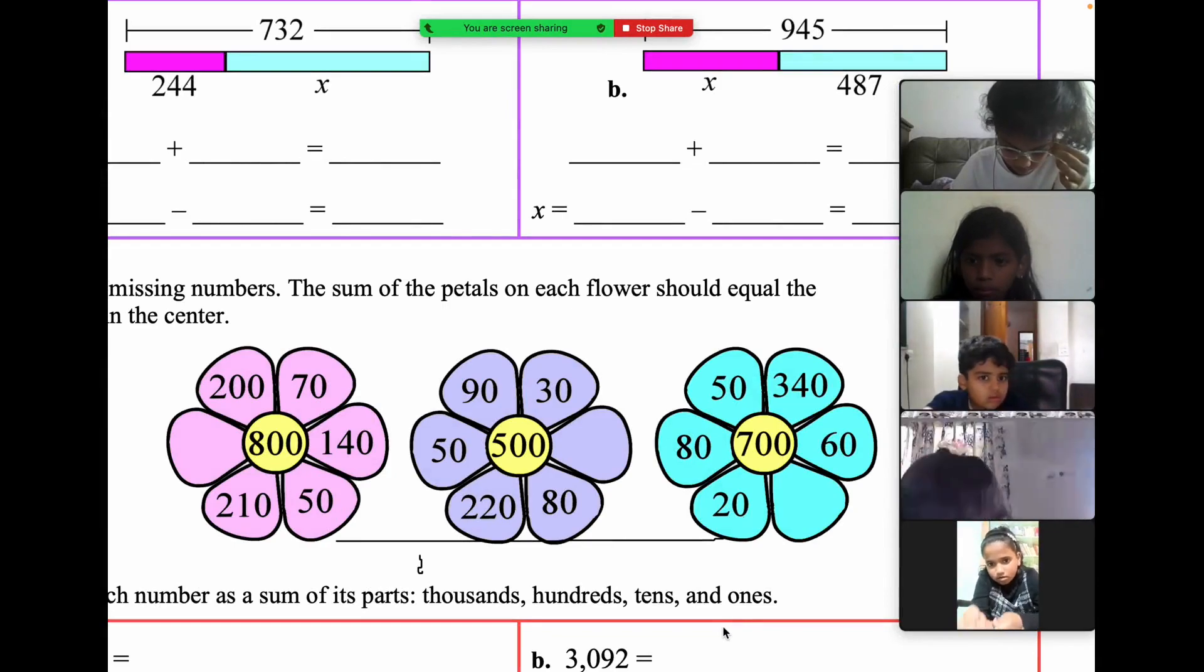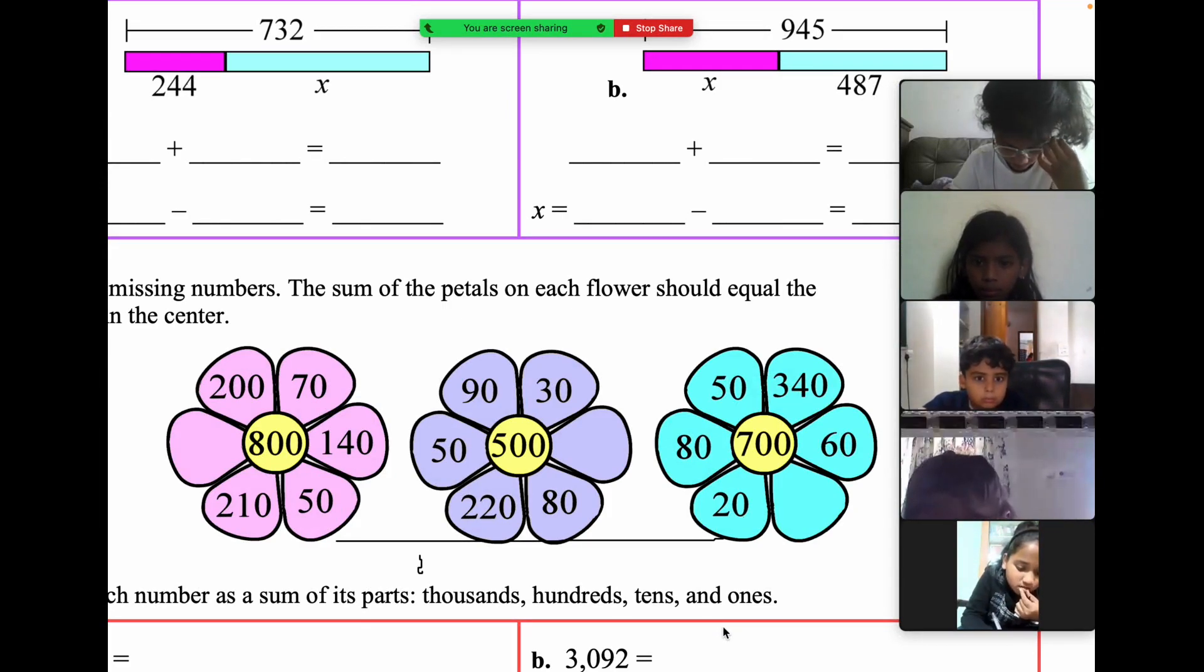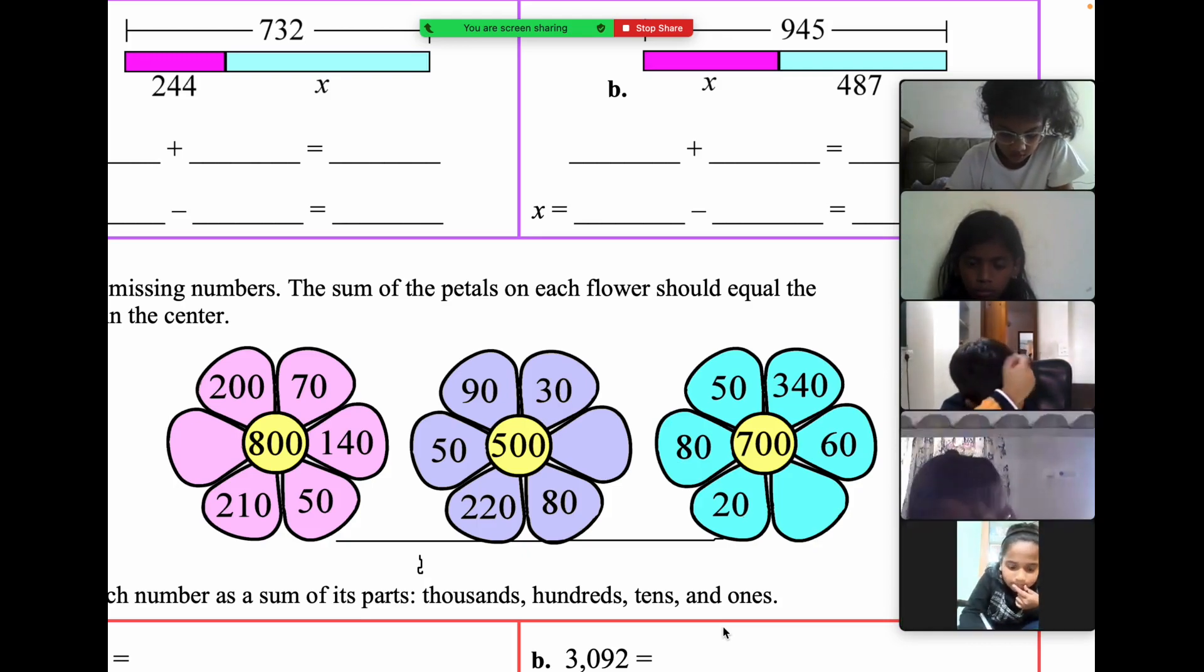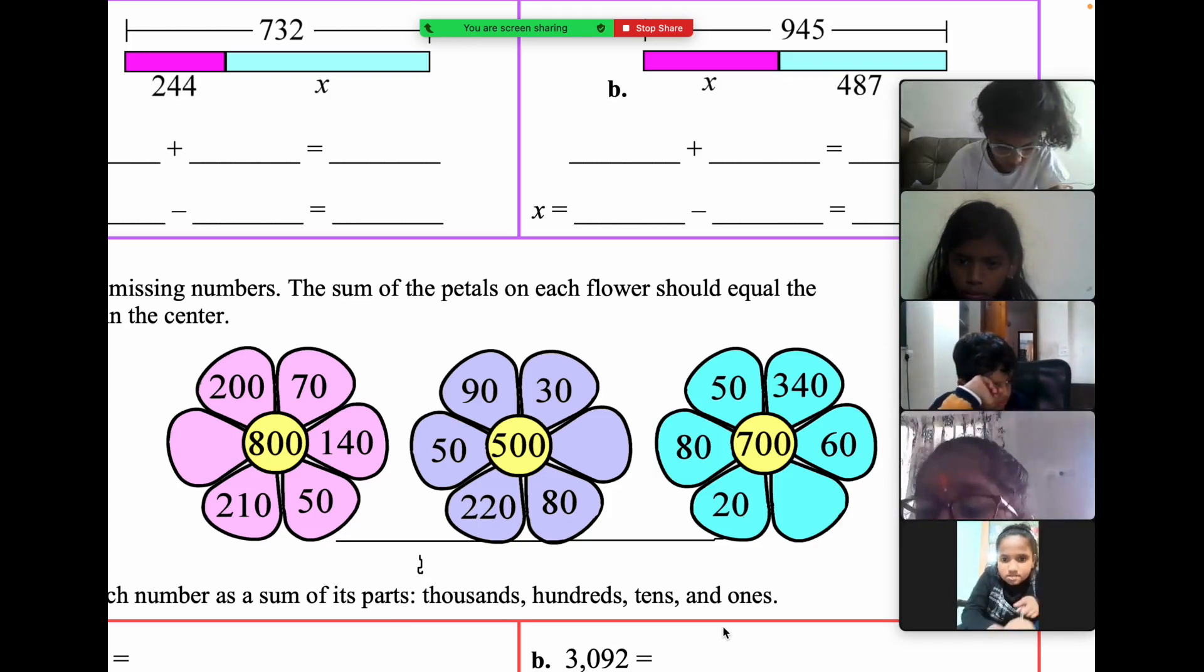200 plus 80 equals 300. 300 plus 50 equals 350. 350 plus 90... Ilan, please mute yourself.